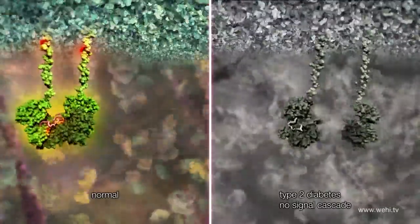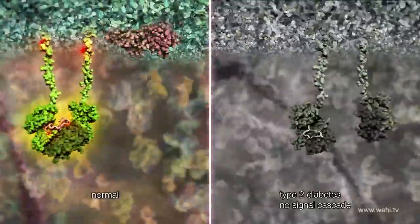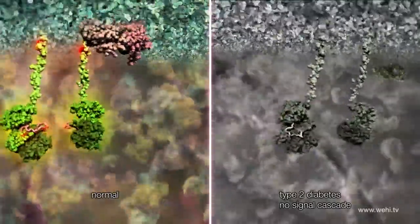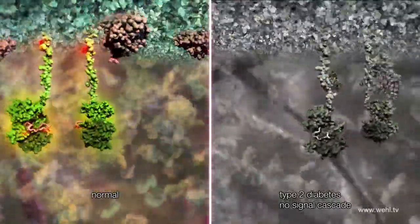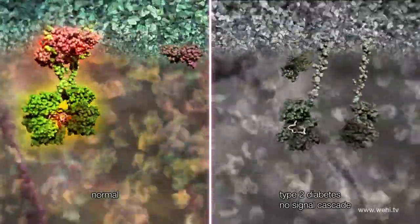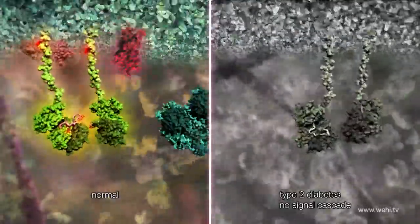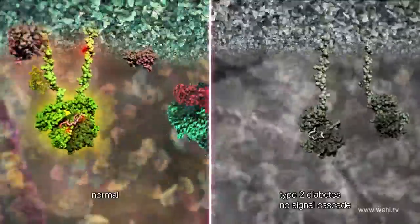In type 2 diabetes, we believe insulin binds to its receptor normally, but the signal is not sent into the cell and the signal cascade does not develop. This is known as insulin resistance. This means that glucose cannot enter the cell and blood glucose remains high. Over time, high glucose levels damage many different organs.